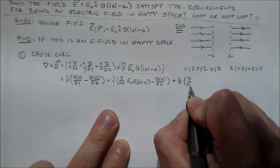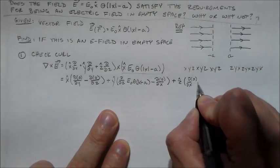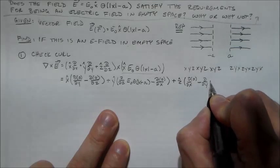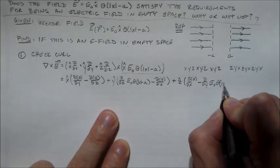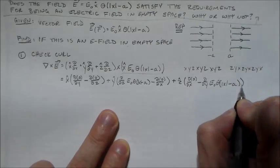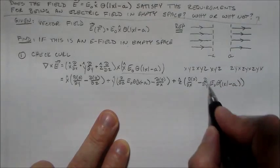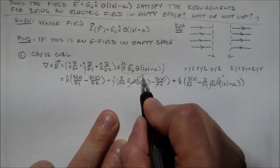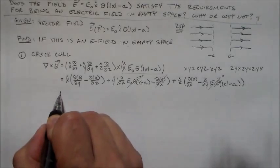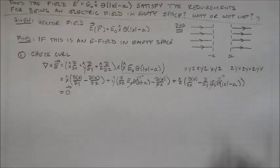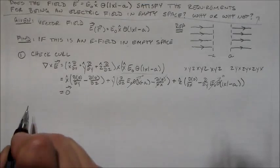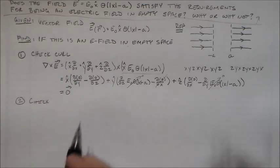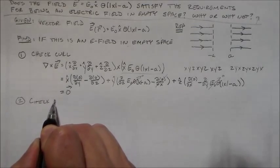So z is, we do the d/dx again. This is on that zero that we keep running into minus d/dy of this e0 theta, the absolute value of x minus a. Now, there's no y dependence here. So this is zero. This is zero. This is zero. No z dependence here. So that's zero. So everything here is zero, which gives us a nice zero here. Which means the curl is okay. We're okay with the curl.